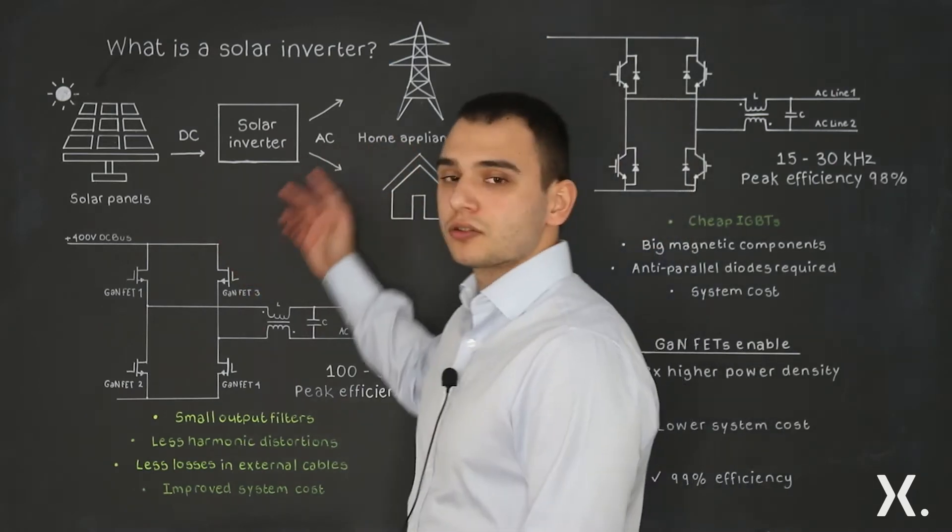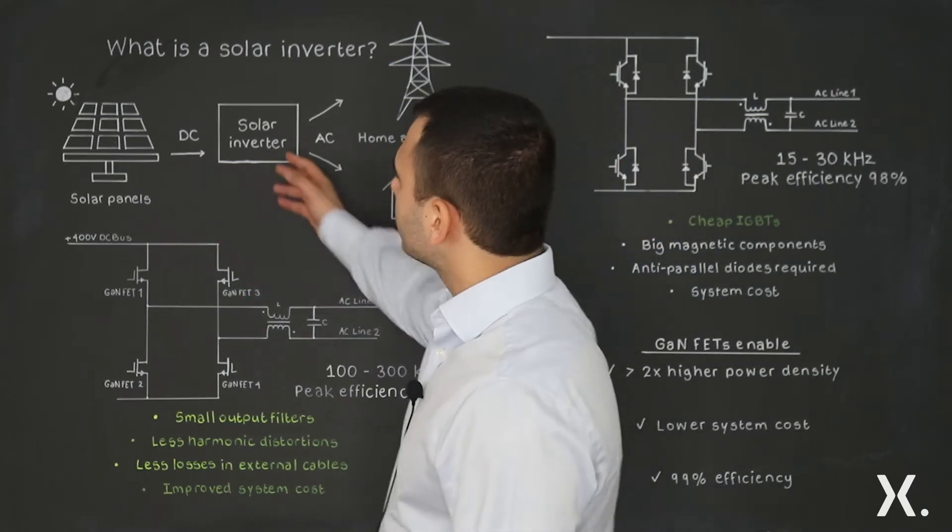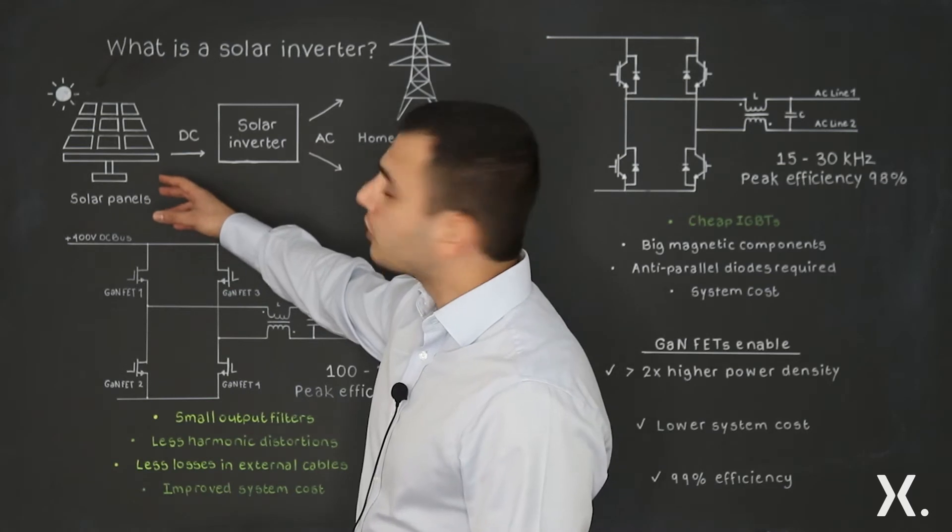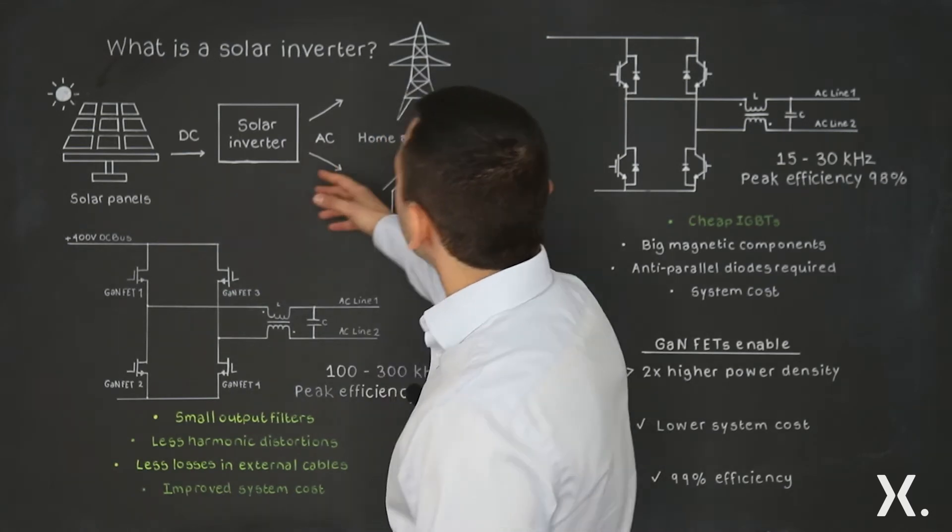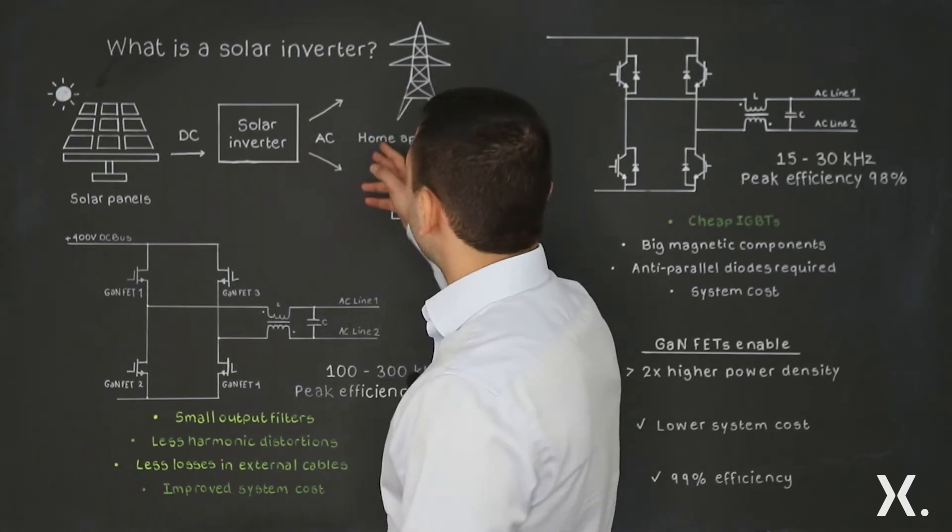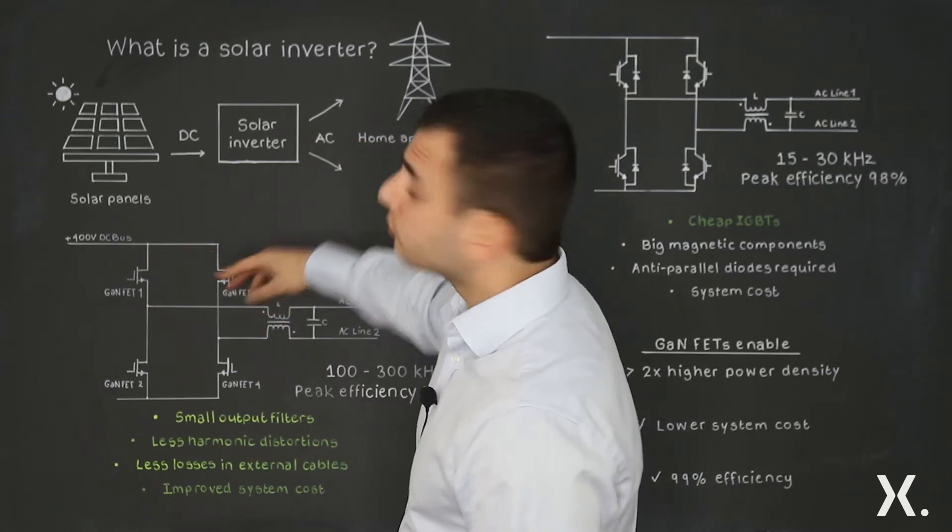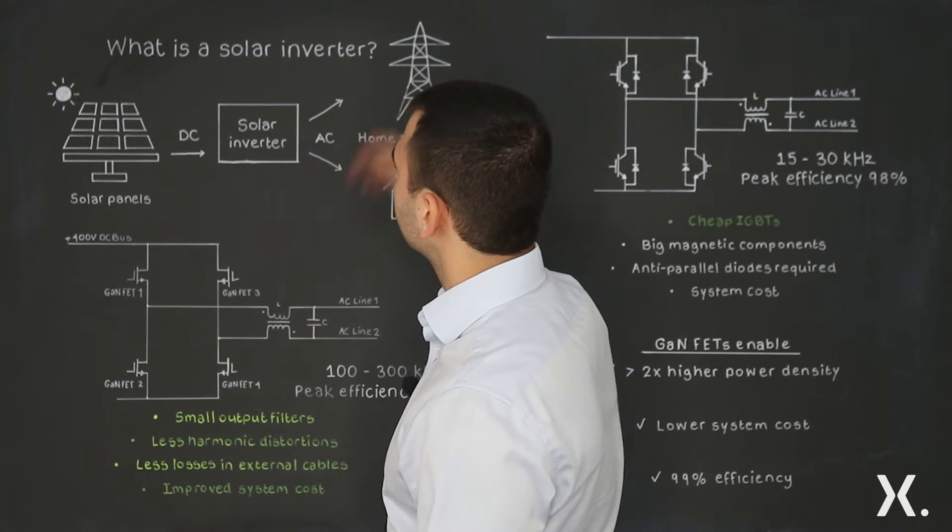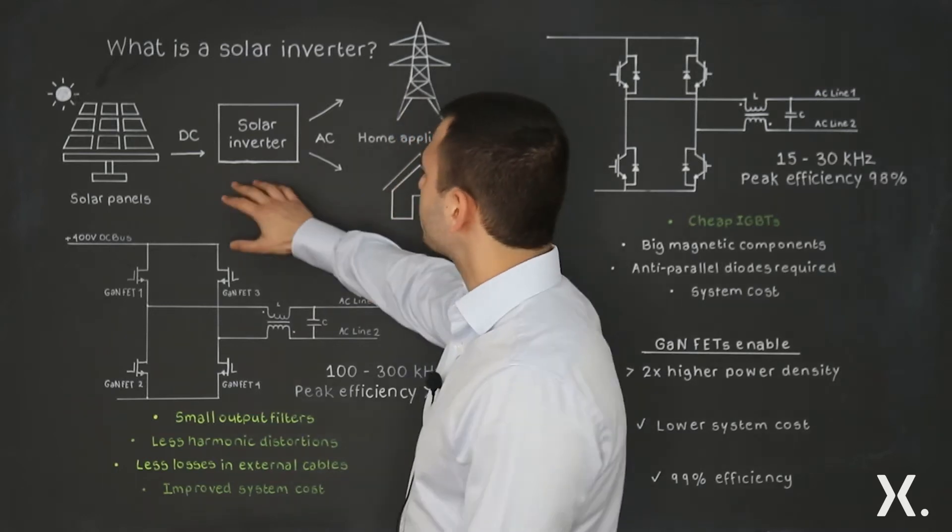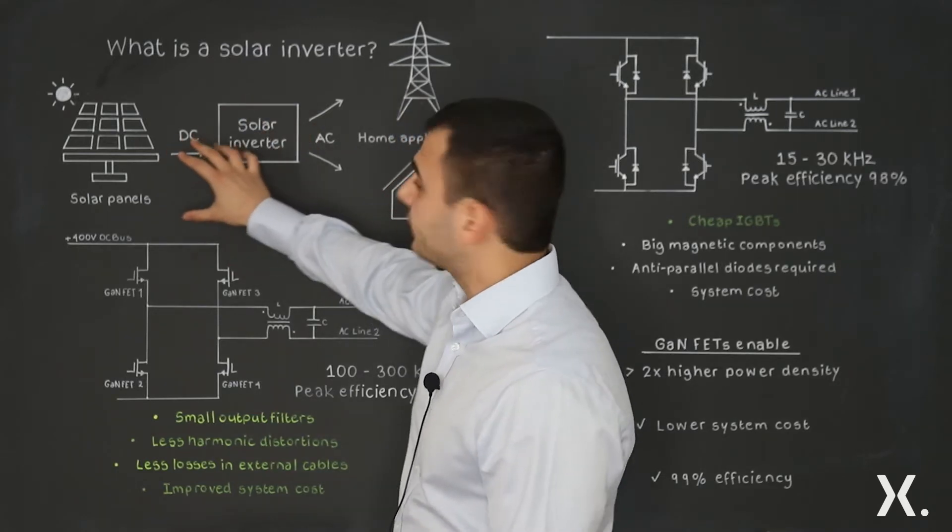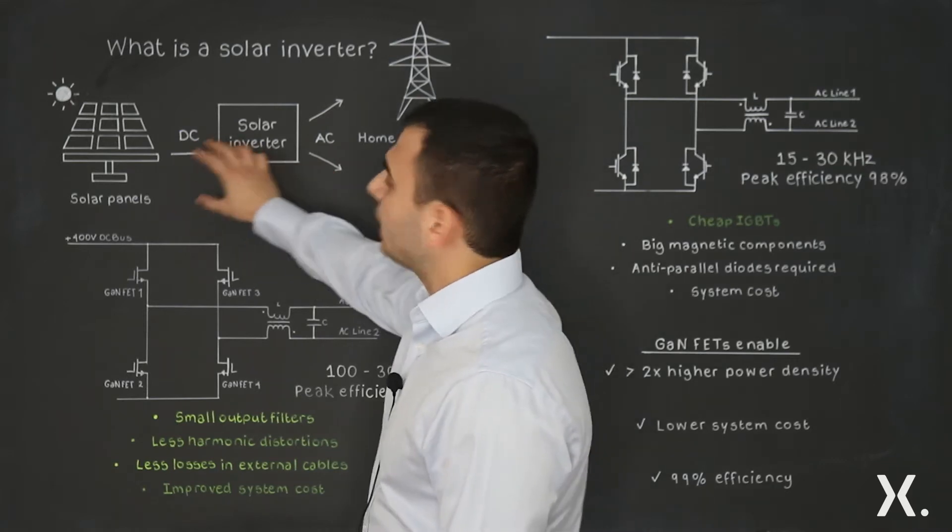So first, let's consider what is a solar inverter. A solar inverter takes the DC voltage from the solar panels and converts that DC voltage to AC that can supply your home or you can feed that back to the grid. The purpose of this is to convert that energy with minimum losses.